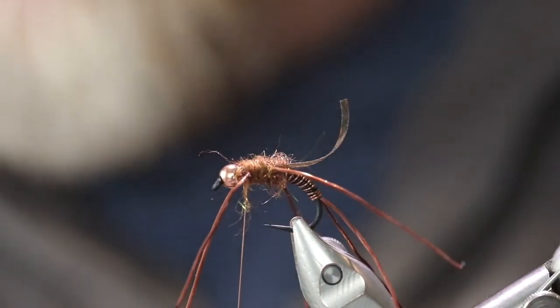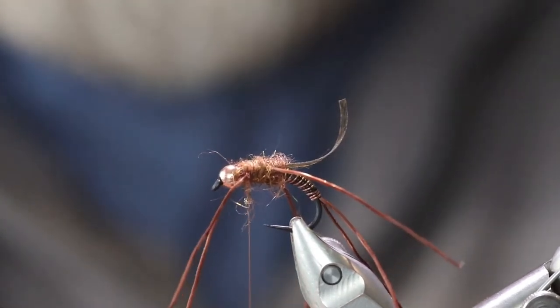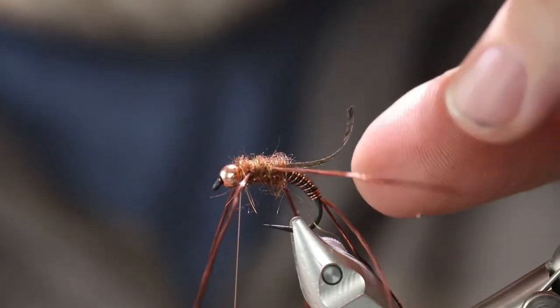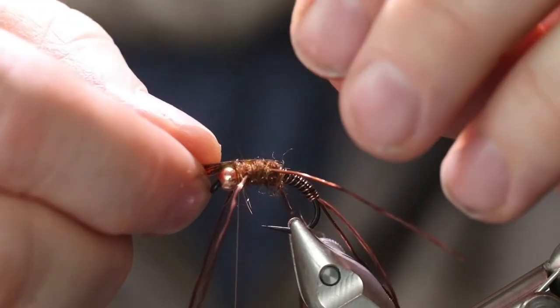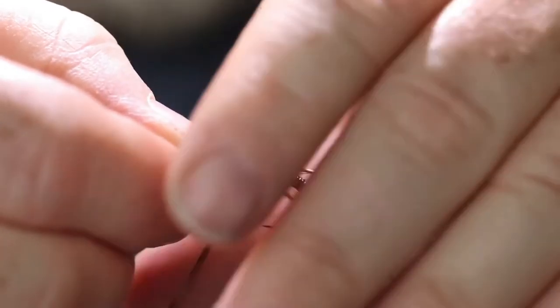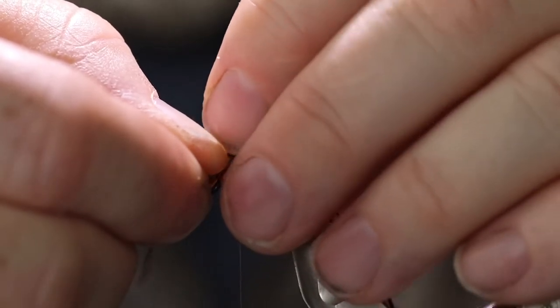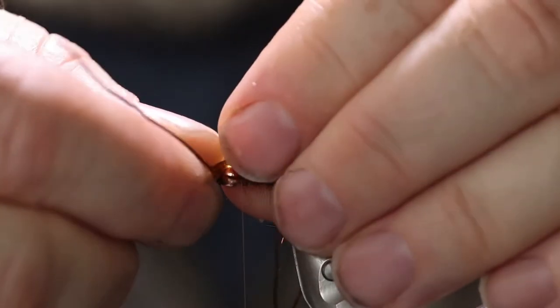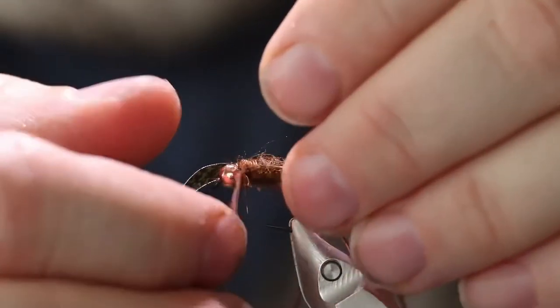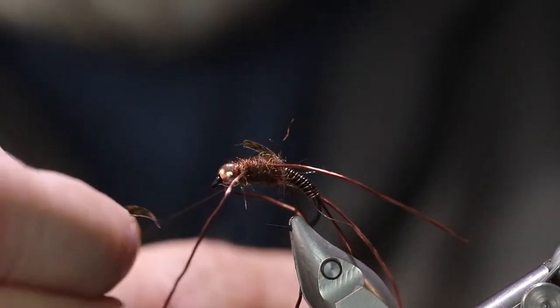Perfect. One more little dab of dubbing on here. Now we're going to run that shell, that wing case material up and over. Make sure you're lined up square with your bead. Now pull those front legs back again. Oh no.